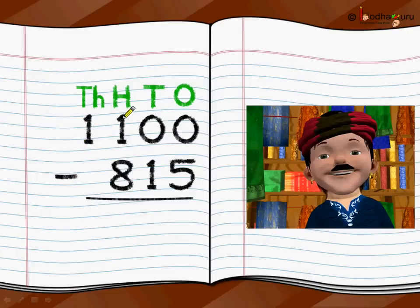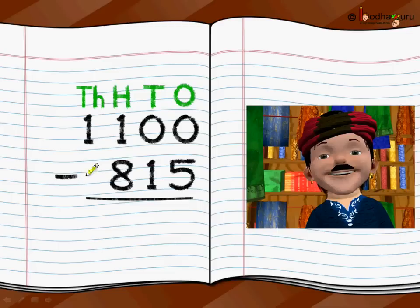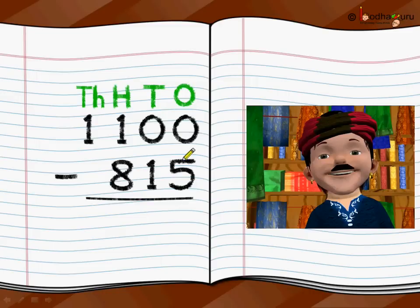We put 1100 with the correct place value: 1 below the 1000, 1 below the 100, 0 below the 10, 0 below the 1. Then we write 815 below it. Do we write 8 from the thousands position? No — 815 has no thousands, so we leave it empty. 8 goes at the hundreds position, 1 at the tens, and 5 at the ones. Write both numbers according to their place values.